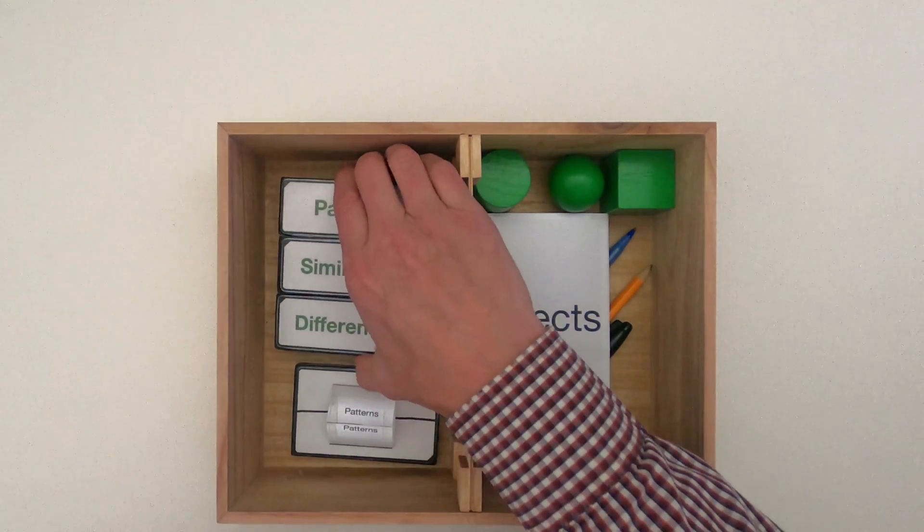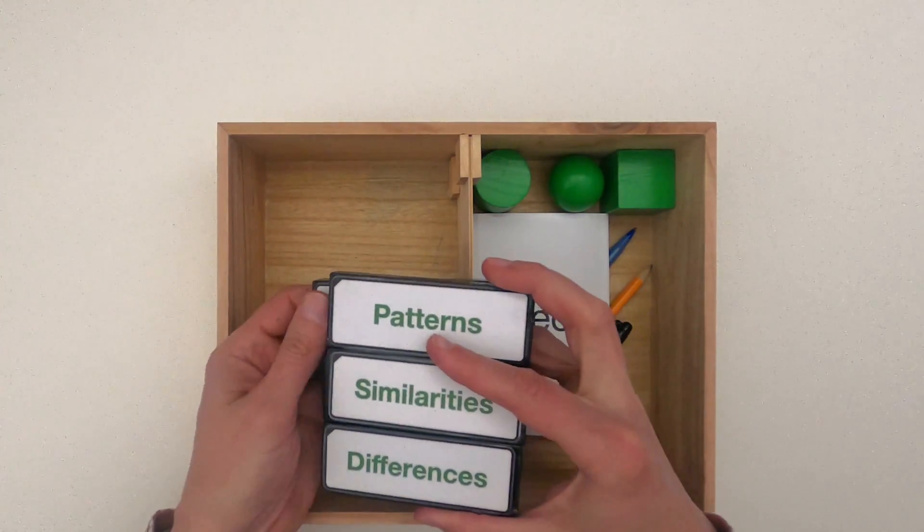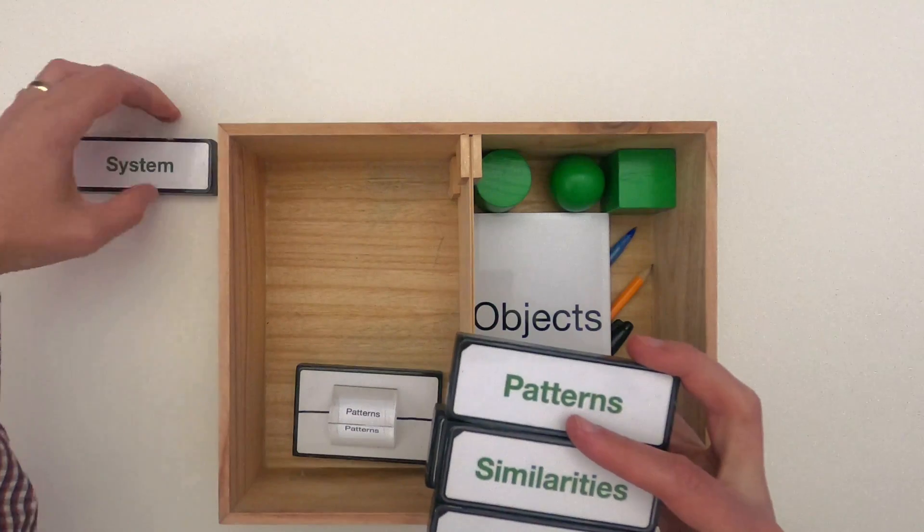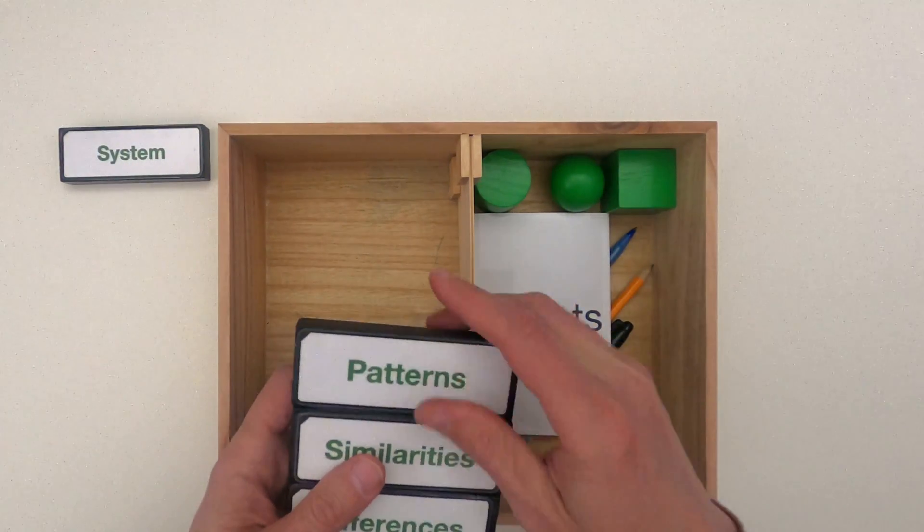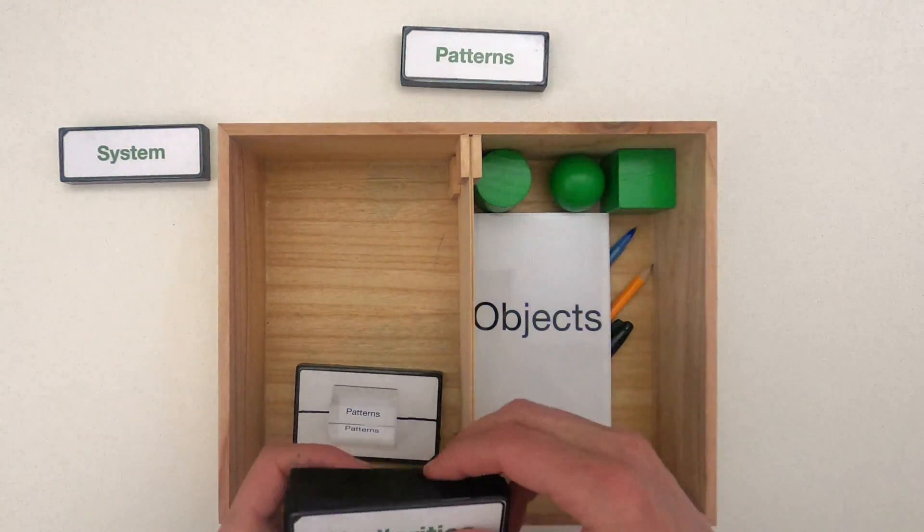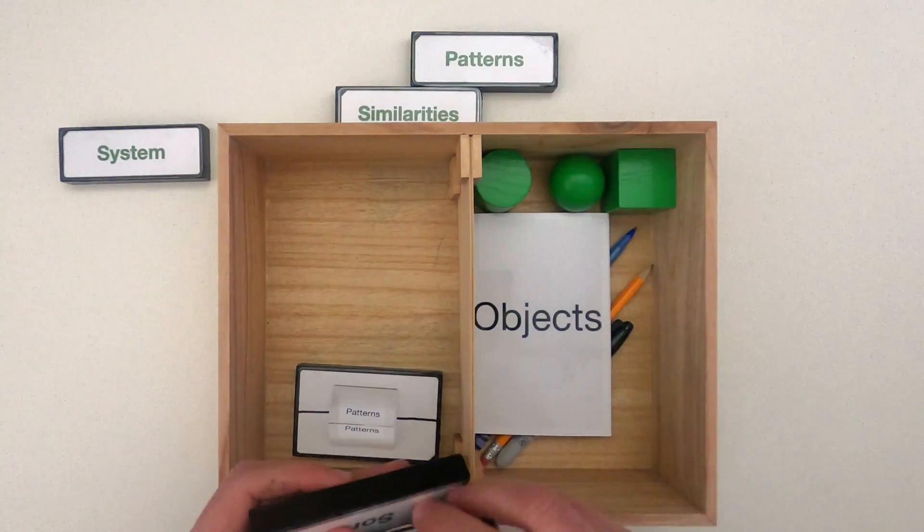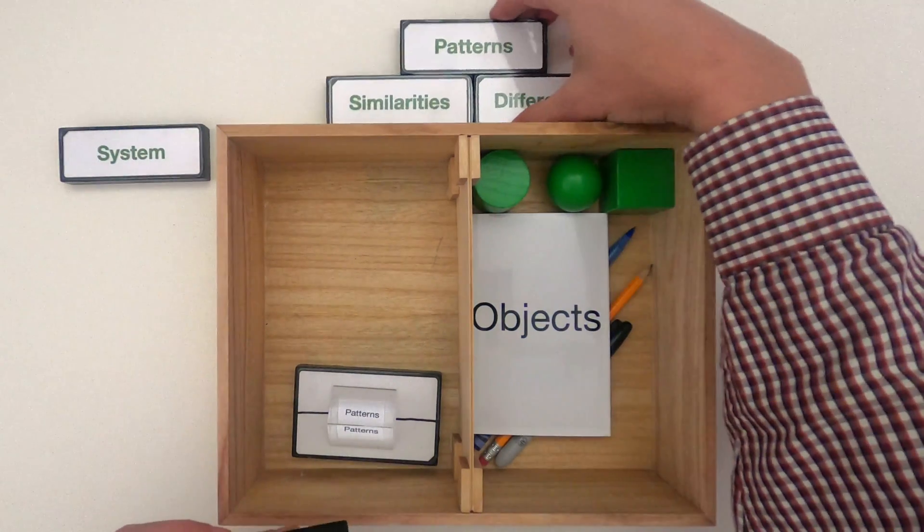When you're looking for patterns, you should always start by defining what's the system that we're going to investigate. But once you've done that, let's just start looking for patterns. What similarities do we see in the system and then what differences do we see in the system?